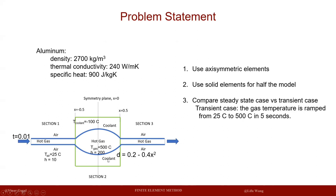All the convection properties are given, and the thickness for the pipe is 0.01 meters. All the convection coefficients are provided here, as well as the aluminum material properties. We need density, thermal conductivity, and specific heat for this problem.